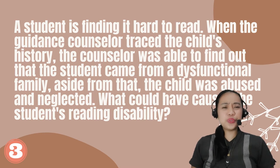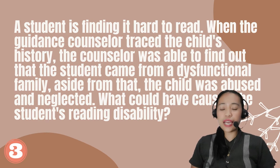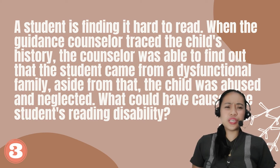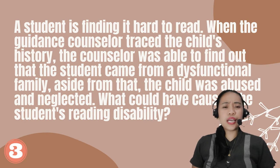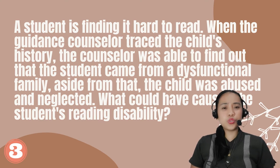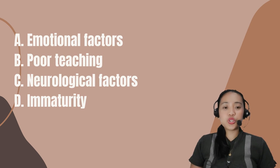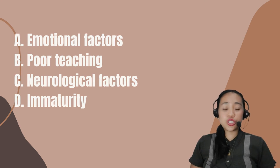Number 3. A student is finding it hard to read. When the guidance counselor traced the child's history, the counselor found out that the student came from a dysfunctional family. Aside from that, the child was abused and neglected. What could have caused the student's reading disability? A. Emotional factors. B. Poor teaching. C. Neurological factors. D. Immaturity.